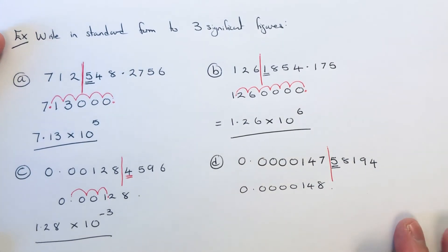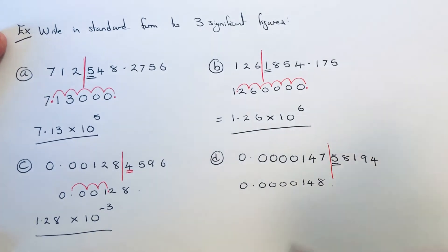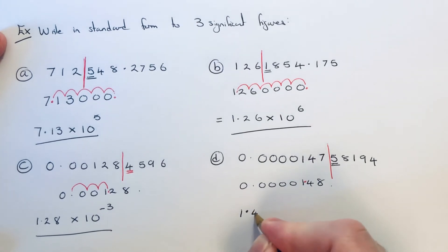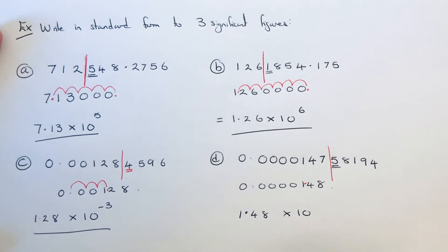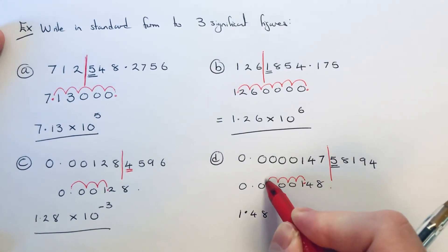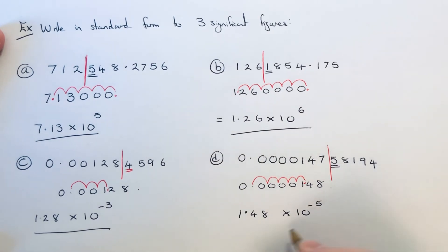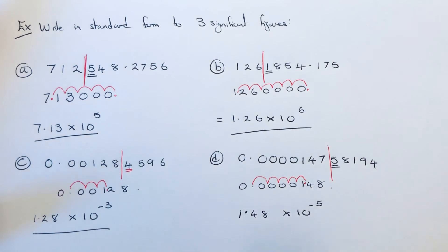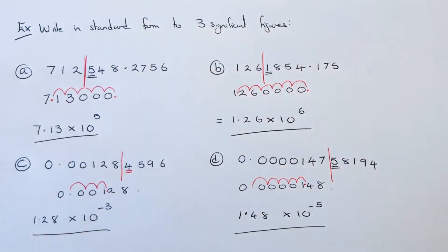We just need to write that in standard form. Make the first digit between one and ten — put the decimal point here, so it's 1.48. Count the jumps between the two decimals: one, two, three, four, five. It's 1.48 × 10^-5 because we have a small number.